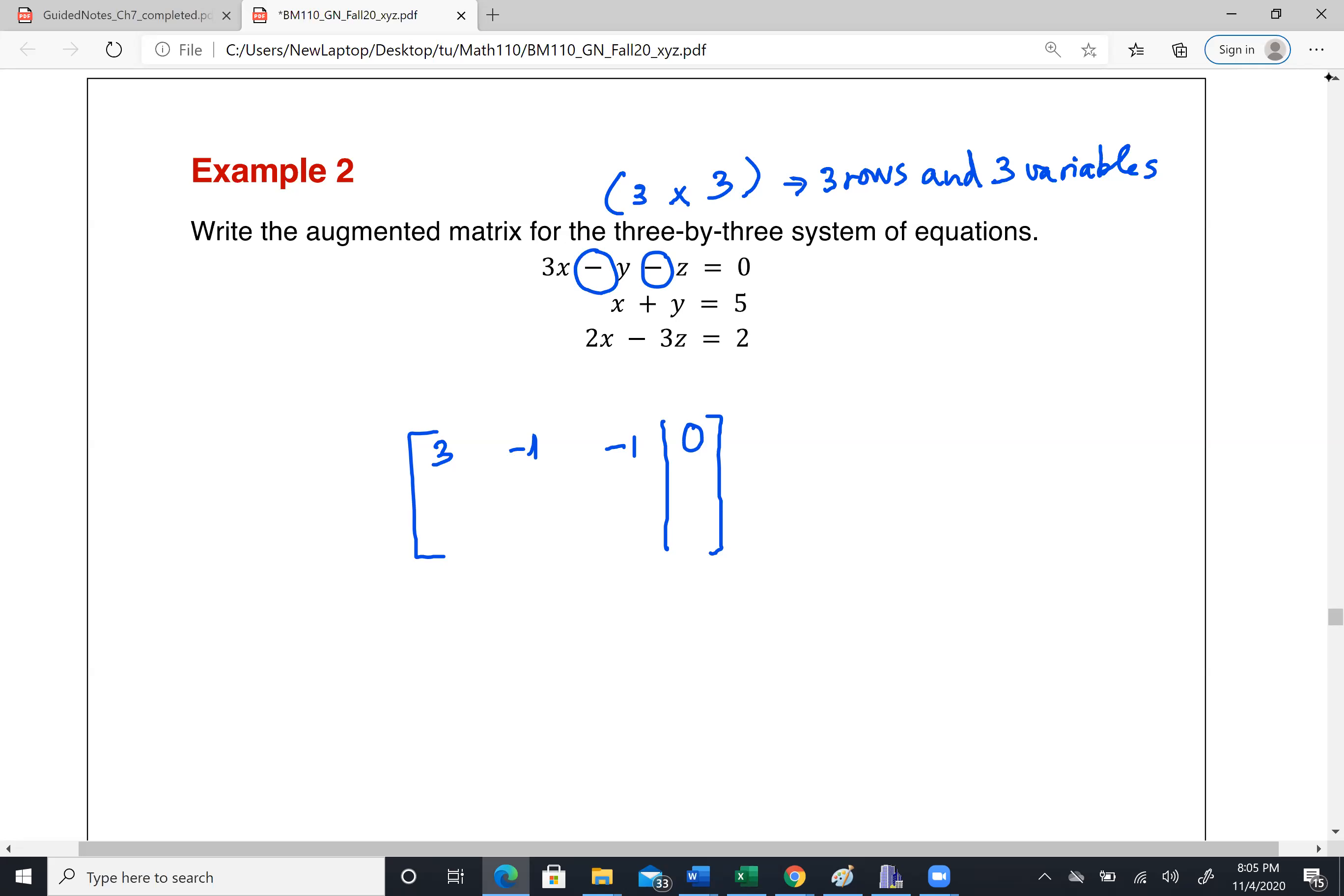Okay, now look at the second one. Do we have the term x? Yes, we do. I actually need to make it look like this better: 3x minus 1y and minus 1z equal to zero. And then I want to make this x in the same column of the first equation. So x plus y equal to five. Oh, I forgot 1z.